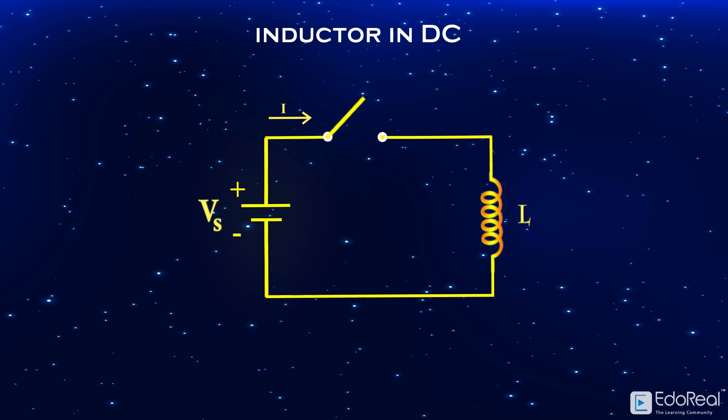In this video, we will discuss the behavior of inductor in DC. Let us consider a simple circuit with a practical inductor which is unmagnetized, connected to a battery or DC source through a switch.